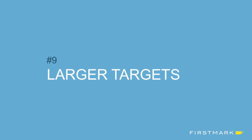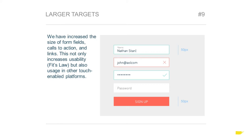Principle nine is the notion of larger targets. Things are not just bigger because they're trendy — we increased the size of form fields, calls to action, and links a lot more than before. This increases usability, as those familiar with Fitts' Law know: the smaller and more distant a target is, the more time it takes to interact with it. We did this not only for usability purposes but also so the design could be adaptable to touch-enabled platforms like mobile and tablets.